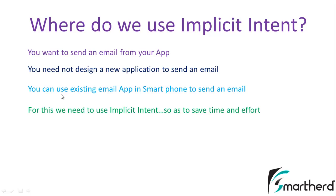You can use the existing email application in the smartphone to send an email. The existing email application such as Yahoo Mail, Gmail, or any other application that the user has in his smartphone — he or she can use that application to send the email directly from your own application. For this purpose, we need implicit intents, which actually saves our time and effort as a developer.